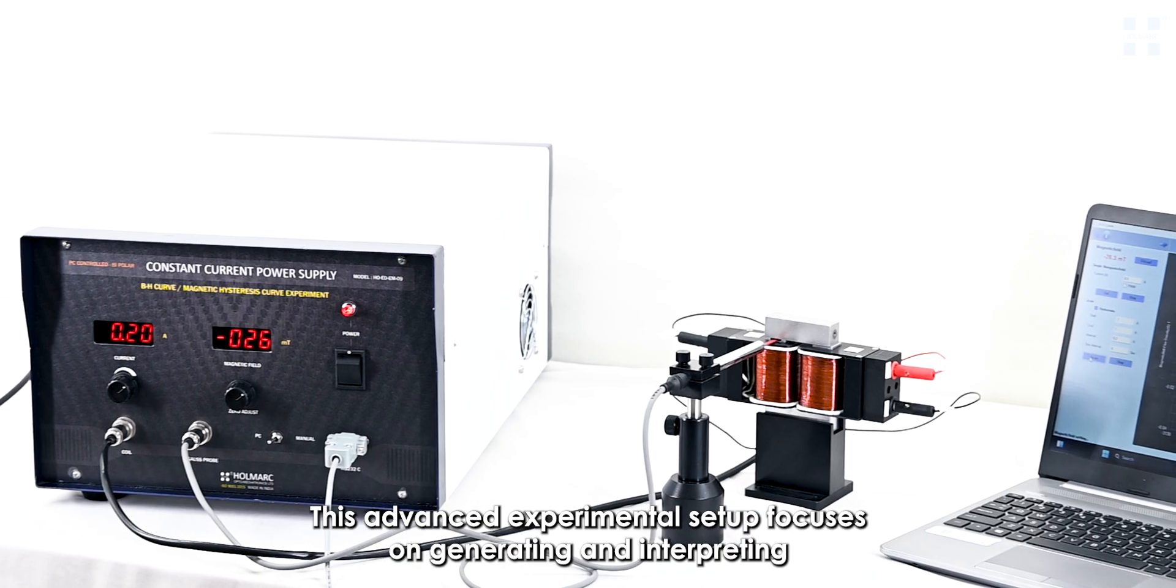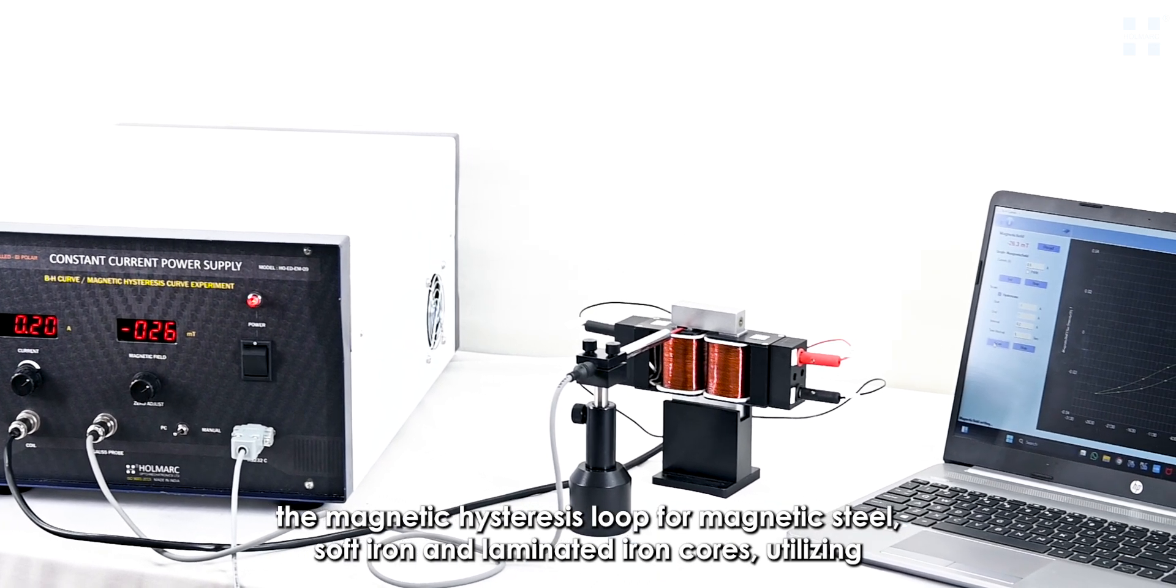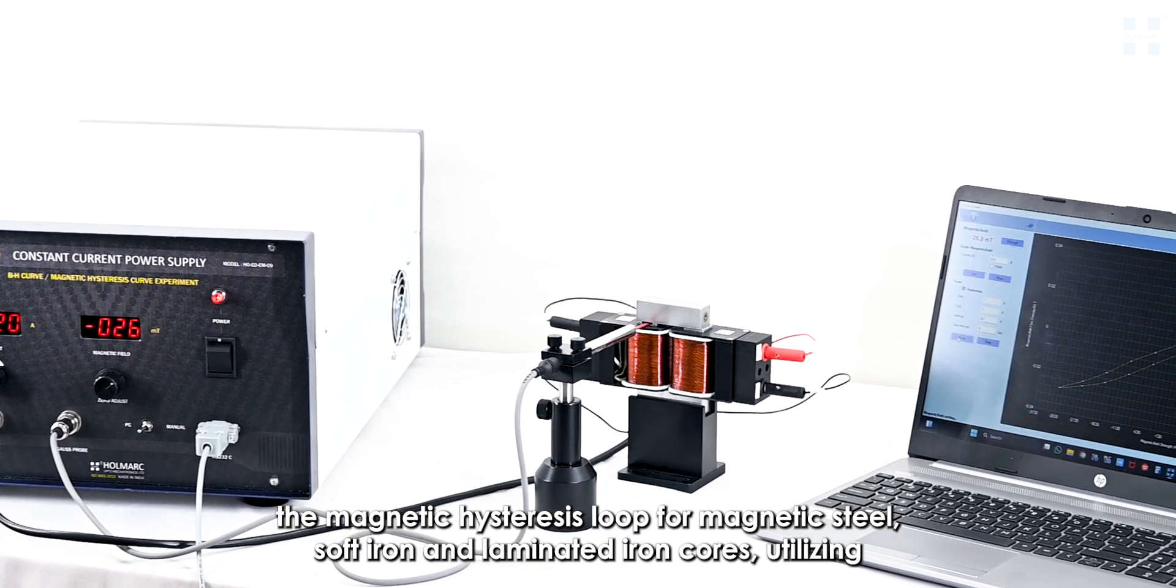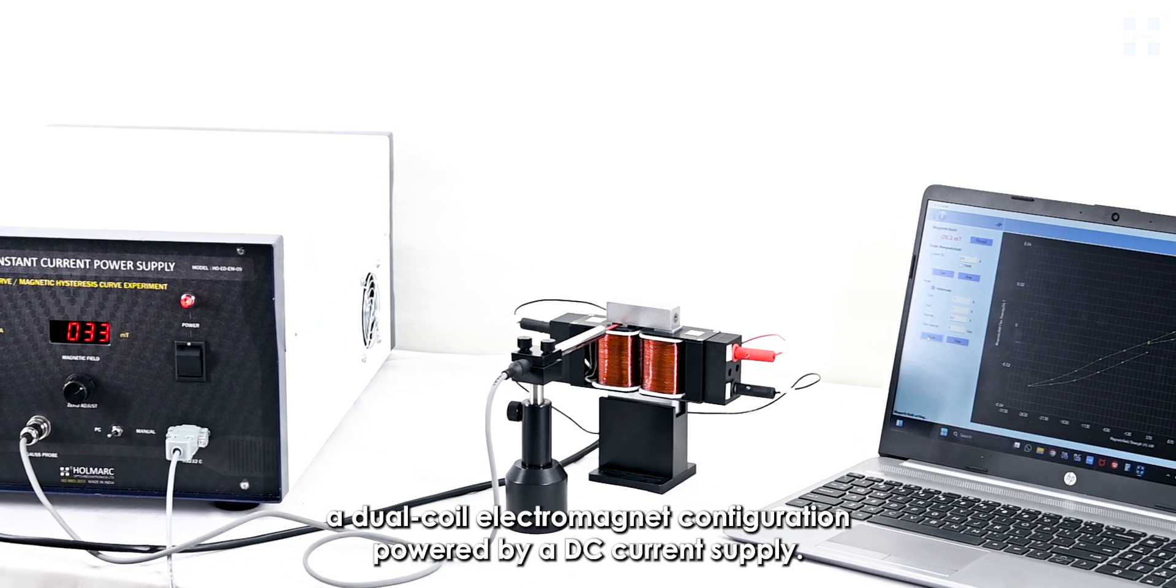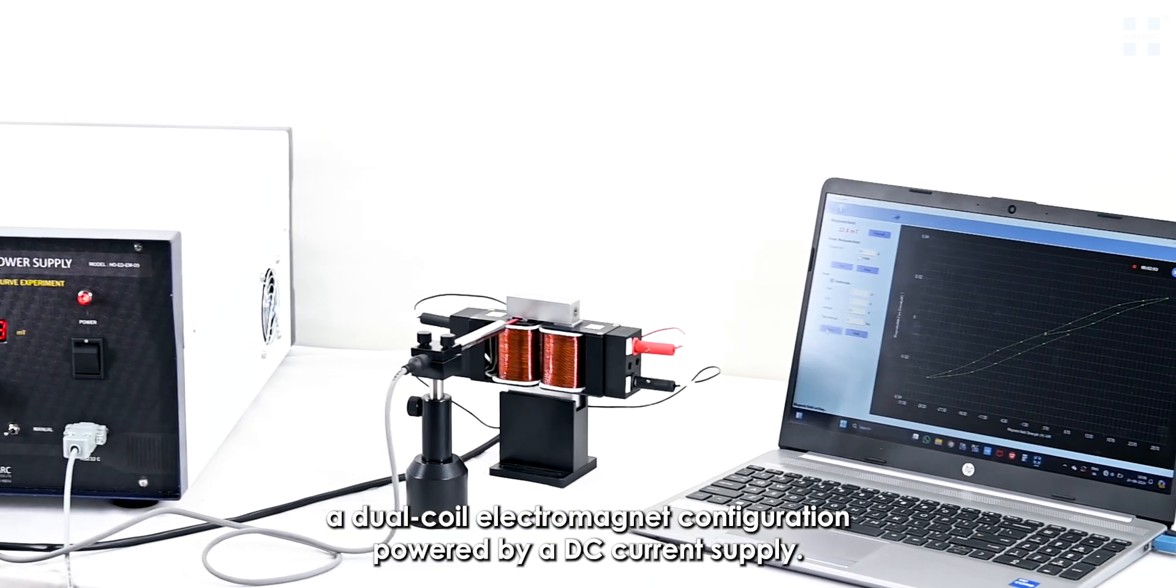This advanced experimental setup focuses on generating and interpreting the magnetic hysteresis loop for magnetic steel, soft iron, and laminated iron cores, utilizing a dual-coil electromagnet configuration powered by a DC current supply.